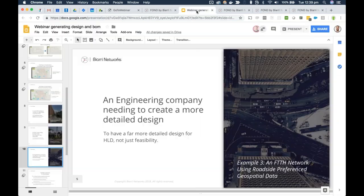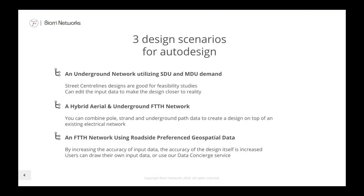To summarize the demonstrations: we've gone through three design scenarios. First, we designed an underground network using a mix of single-family unit and MDU demand — street centerlines are good for feasibility study, helping understand quantities like homes per route mile. We can edit input data to match reality, as we did when input data was missing. Second, we had a hybrid aerial and underground fiber-to-the-home network combining pole, strand, and underground data — a design on top of an existing electrical network. Third, we used roadside preference data to increase input data accuracy, and edited it further to influence the design and increase accuracy of the actual output.